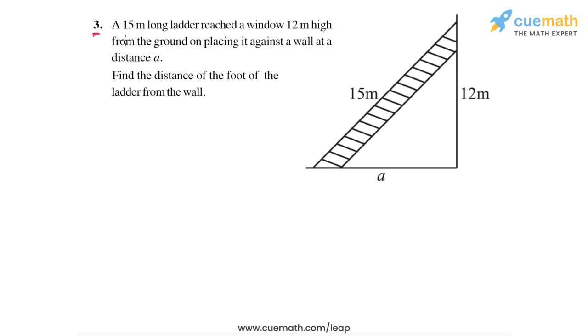In question 3 of this exercise, the problem statement says a 15 meters long ladder reached a window 12 meters high from the ground on placing it against a wall at a distance a.